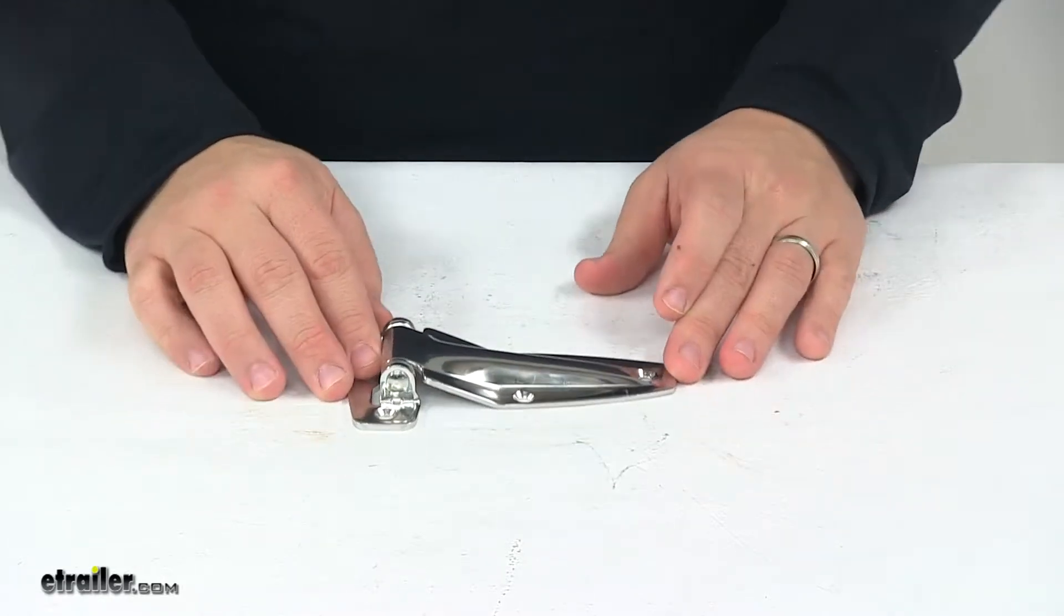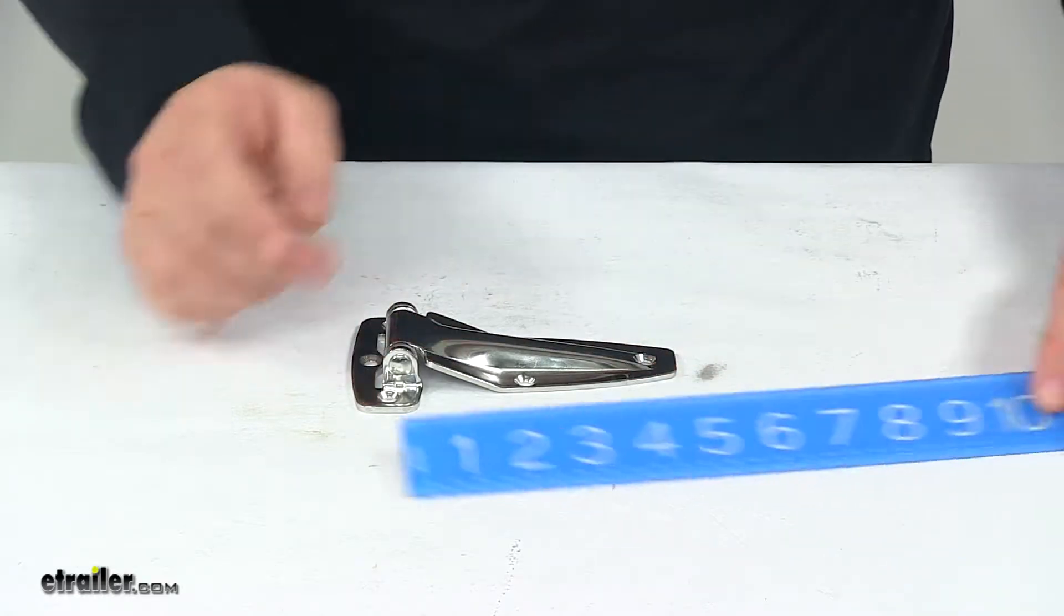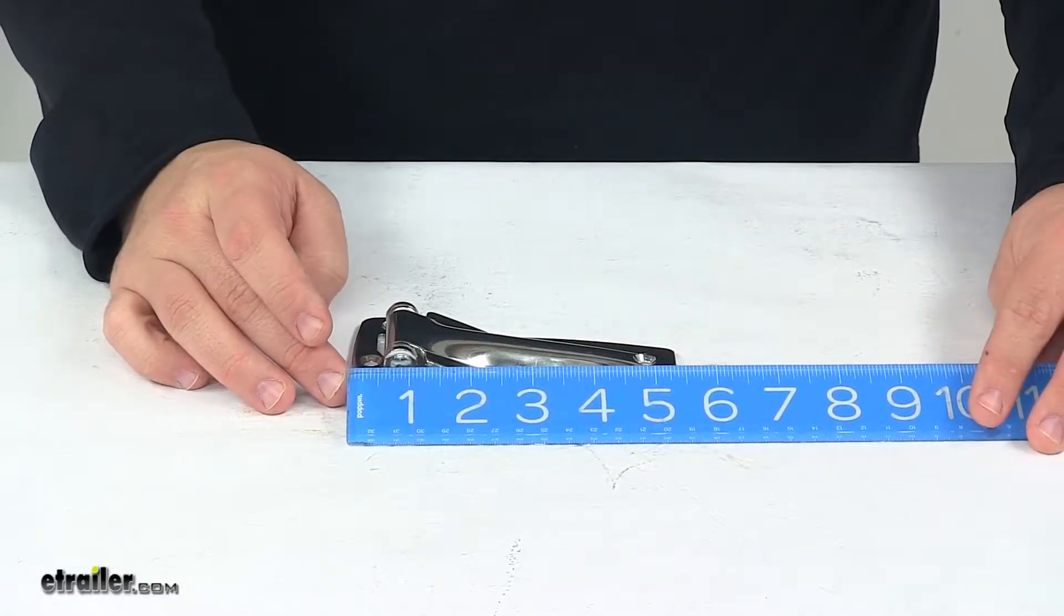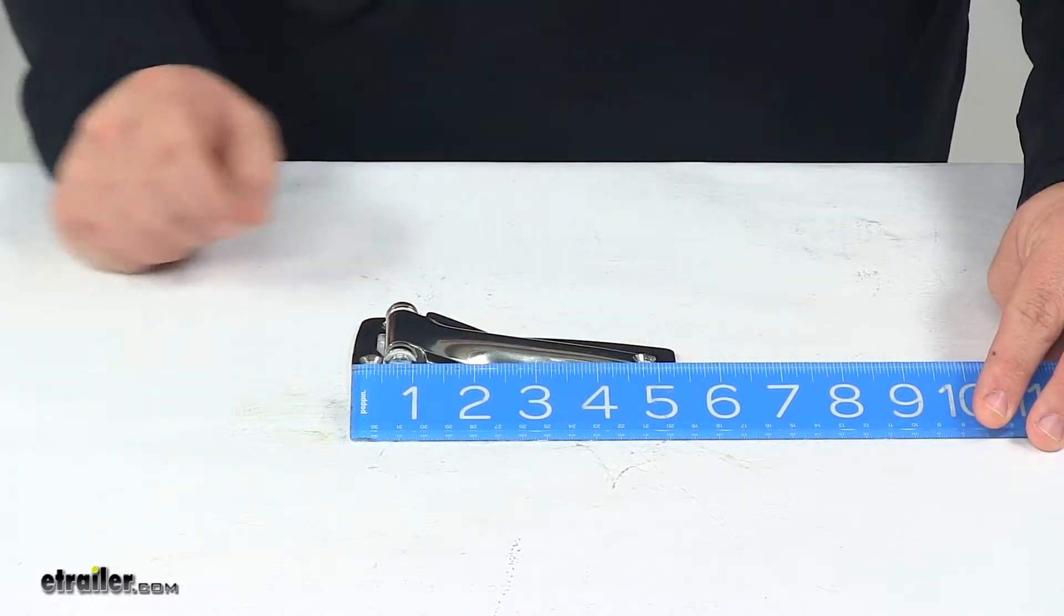The overall length of the unit when it's laying flat like this, from the very back of the base to the very end of the strap, gives us a measurement of around five and a half inches long.